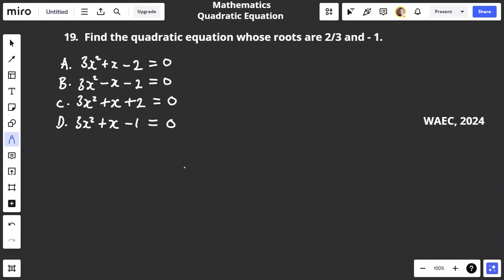Welcome to WAEC 2024 question number 19 under the topic quadratic equation. It says find the quadratic equation whose roots are 2/3 and -1.